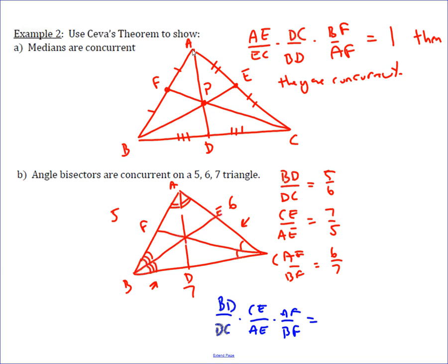Well, that equals 5 over 6 times 7 over 5 times 6 over 7. The 5's cancel, 6's cancel, 7's cancel, that equals 1, which shows that those three angle bisectors are concurrent...